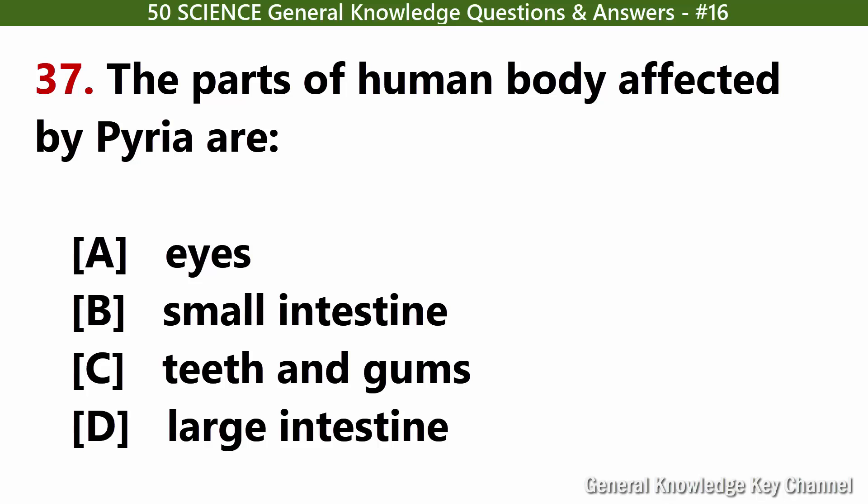The parts of the human body affected by pyria are? Answer C: Teeth and gums.